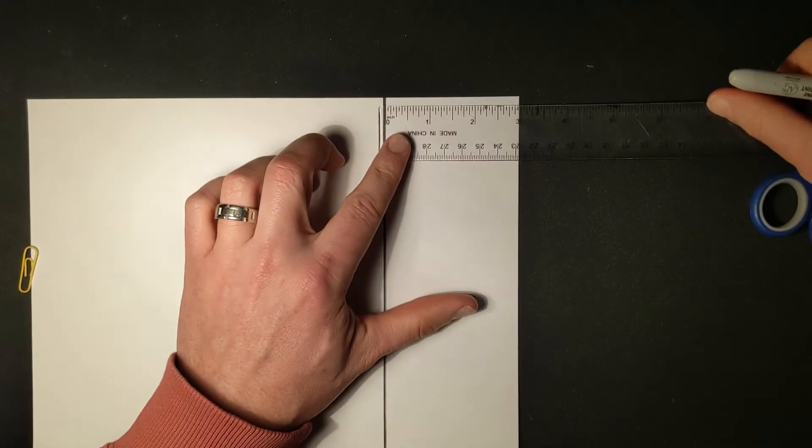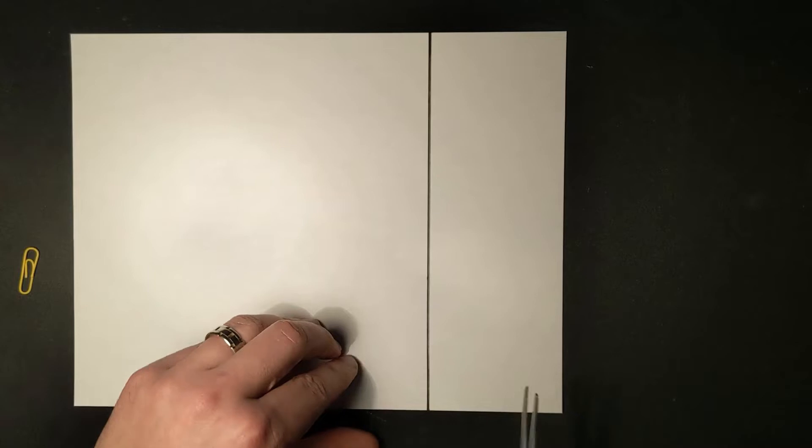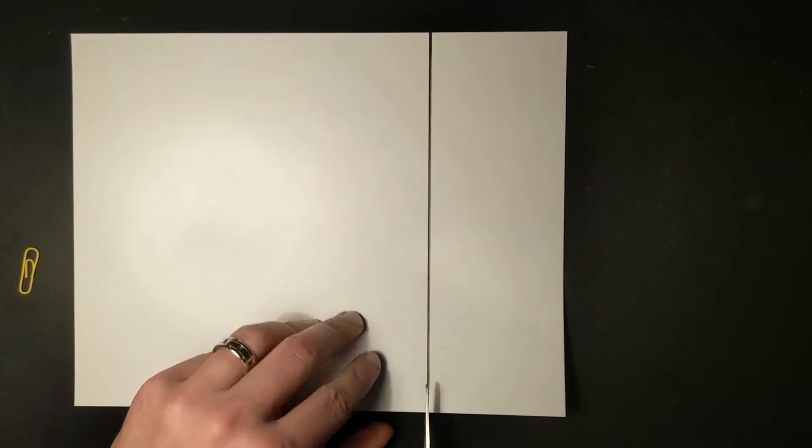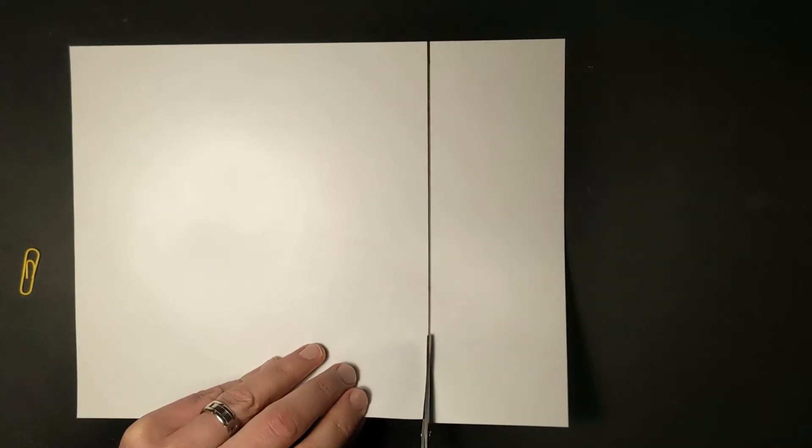So now what I'm gonna do is I'm going to cut along that line in order to get a smaller strip of paper that is going to end up being our rotocopter. So I'll just carefully cut along that line. Doesn't have to be perfectly straight, doesn't really matter, but it should be close. We're gonna set this other piece aside. We no longer need it.